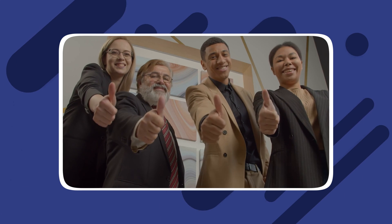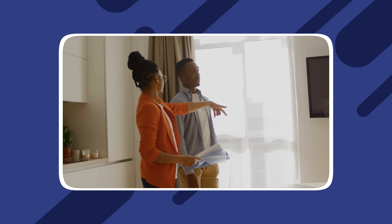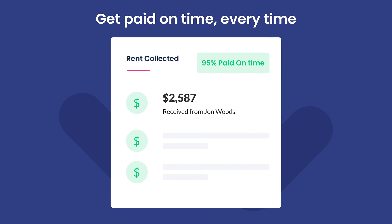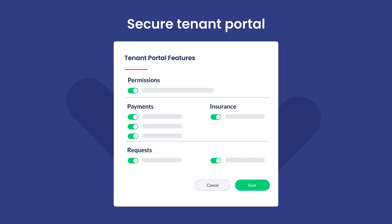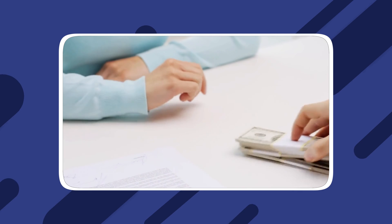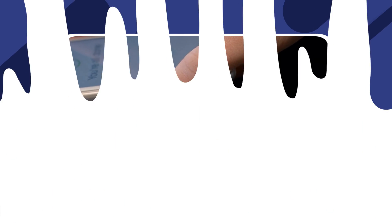First up is DoorLoop. With DoorLoop you get all the core property management services you'd expect from a great all-in-one tool, and so much more. DoorLoop lets you collect rent online and includes a tenant portal — it's easier than ever for your tenants to pay rent and other monthly fees. With a full-service CRM and tenant portal, you can communicate with tenants, collect rent payments, and give tenants a convenient portal accessible via their smartphone.